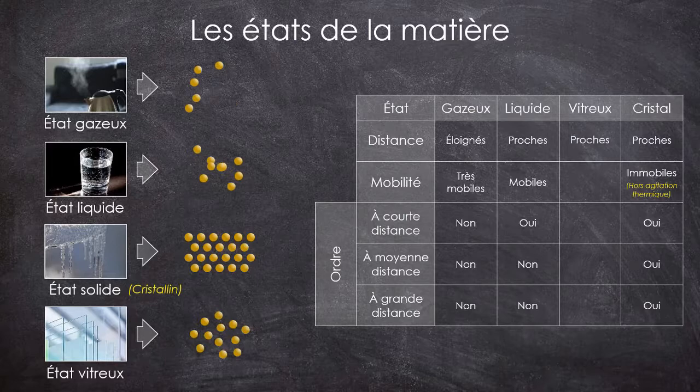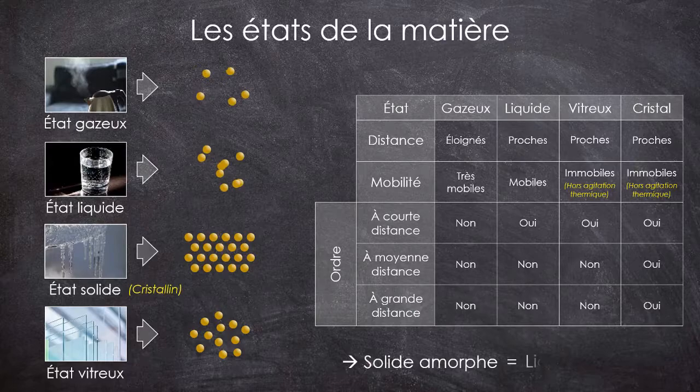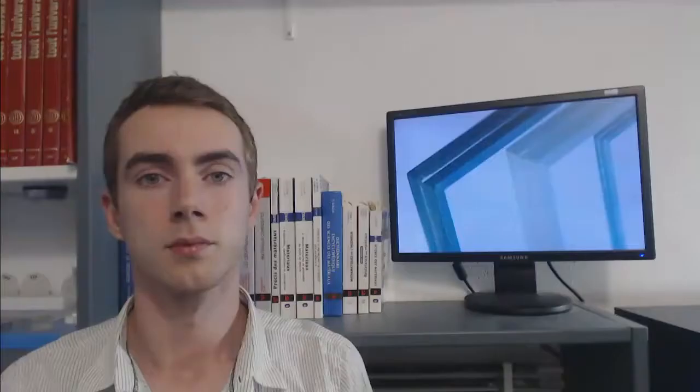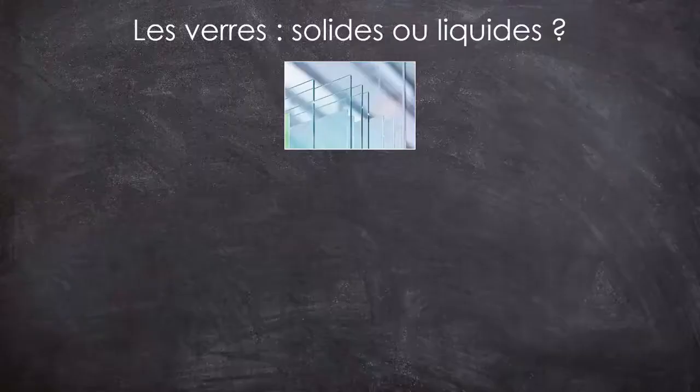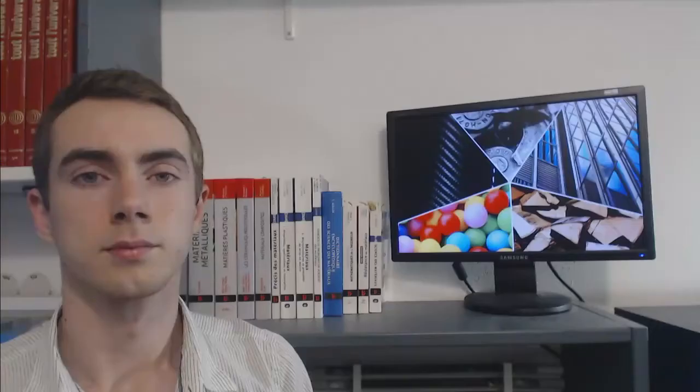Alors où se place l'état vitreux là-dedans ? Tammann parle d'un solide amorphe, ce qui impliquerait que les constituants sont proches, immobiles, et présentent un ordre uniquement à courte distance. Quand on regarde nos états, on voit que cette définition de solide amorphe permet aussi de considérer le verre comme un liquide immobile, figé. Et là se pose une question qui turlupine bien des personnes depuis de nombreuses années : le verre, est-il un solide ou un liquide ? D'un côté, c'est bel et bien un solide, puisqu'il a des propriétés mécaniques. Mais de l'autre, il a la structure d'un liquide figé, si bien qu'un autre chimiste, Horst Scholz, définira en 1977 le verre comme étant un liquide surfondu, figé.